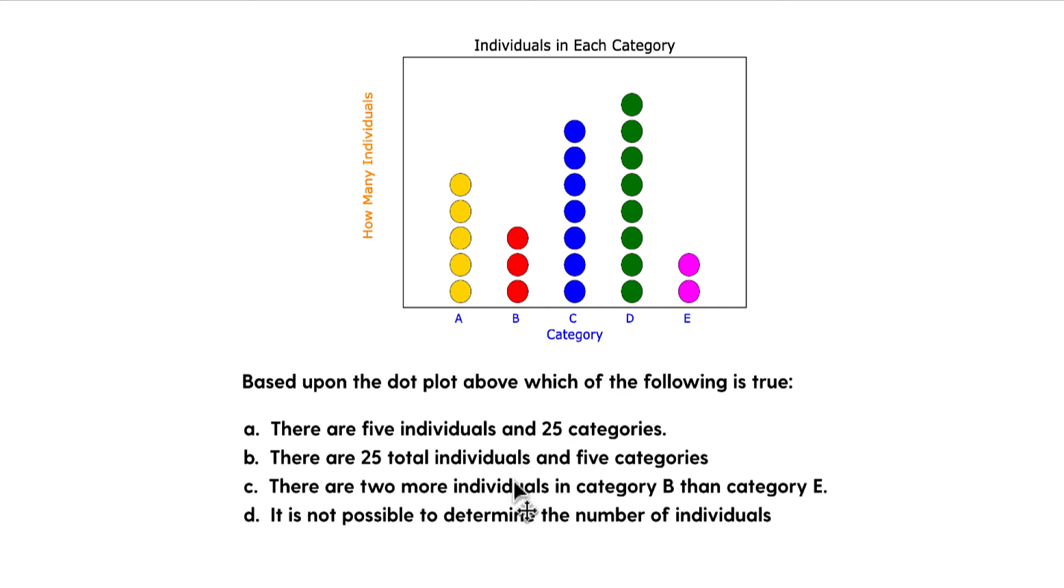Let's just make sure. Let's go to C. There are two more individuals in category B than category E. No, we have three individuals in B and two in E. So that's the difference of one, not two. D says it is not possible to determine the number of individuals. No, you can. You can actually count them. And so the correct answer in this case is B. That's how you do dot plots.